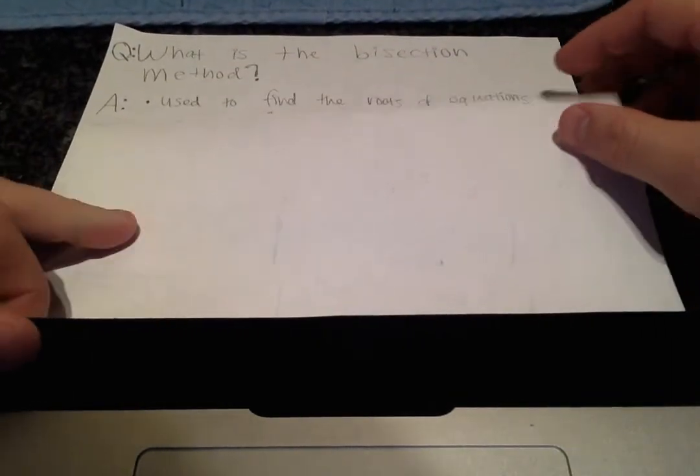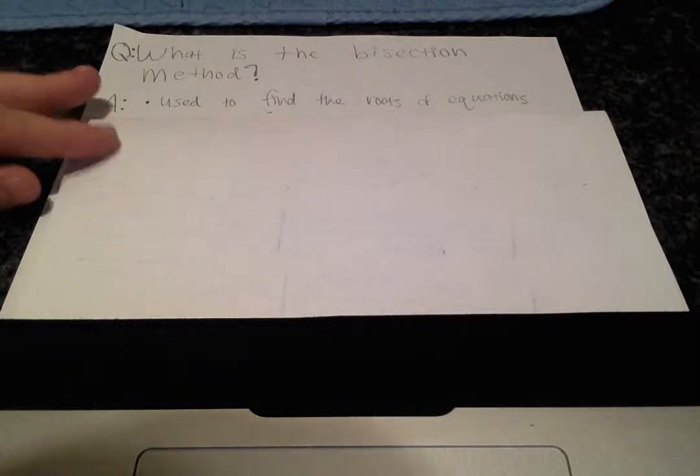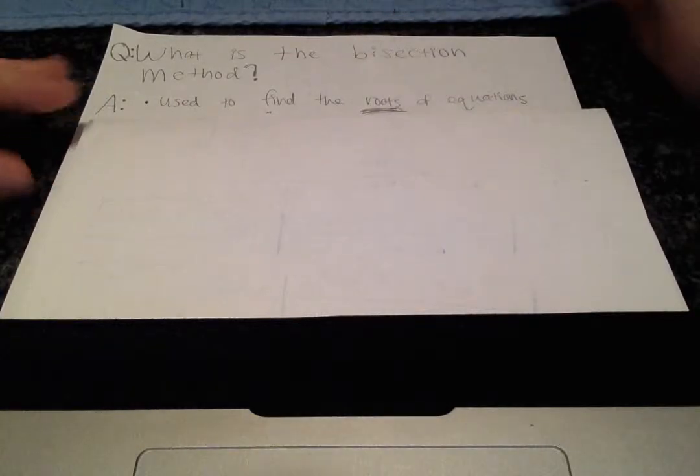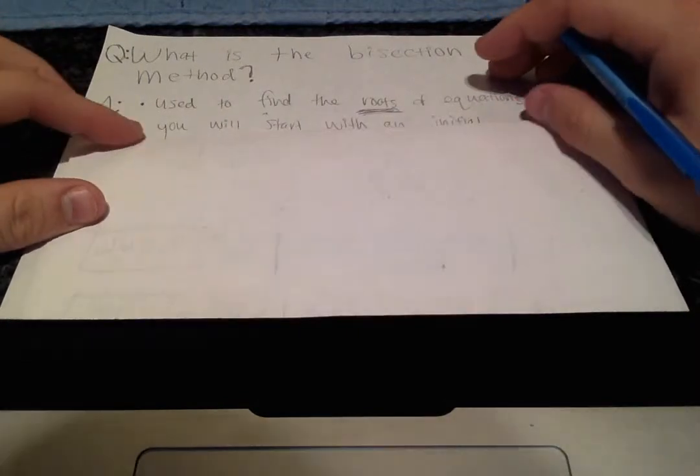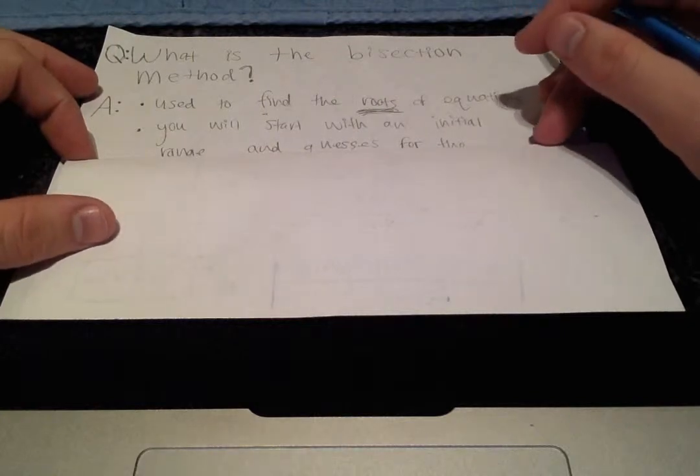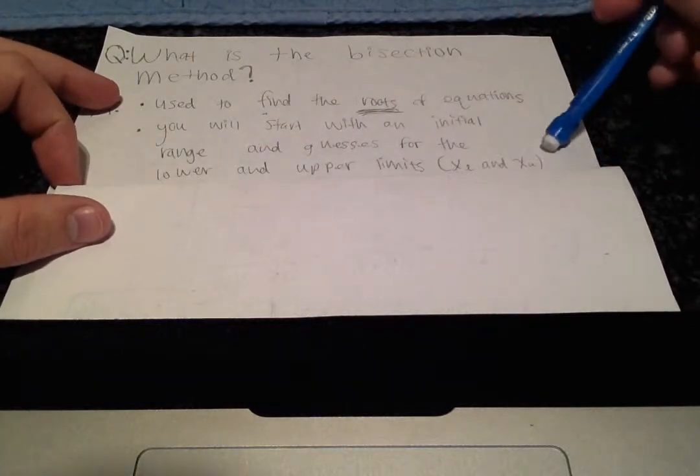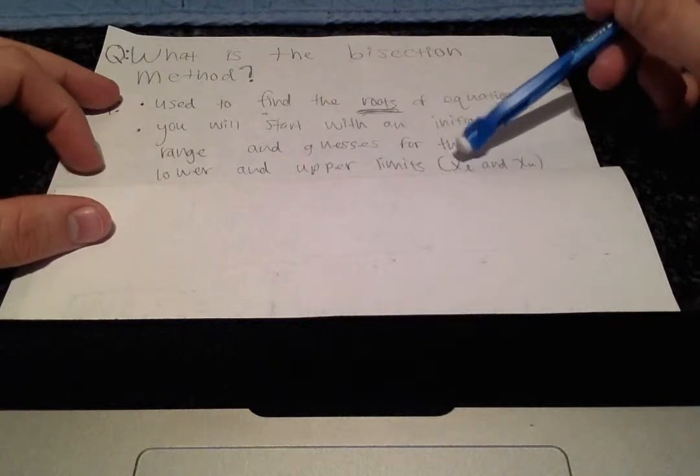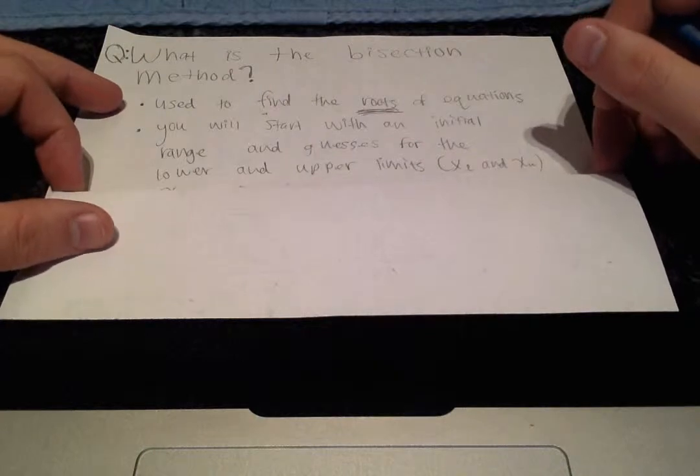All right, so this is a method in numerical methods that's used to find the roots of equations. And the way that's done is you'll start with an initial range, and you'll also be given guesses, lower and upper limits. So, x sub l and x sub u will represent the lower and upper limits, respectively.